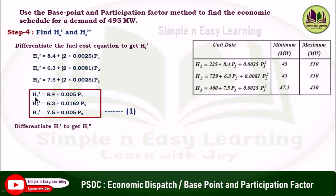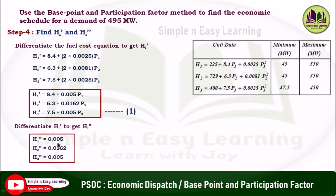Now differentiate h_i' to get h_i''. Differentiating h1' = 8.4 + 0.005·P1: the constant 8.4 gives 0 and 0.005·P1 gives 0.005. So h1'' = 0.005. Similarly, h2'' = 0.0162 and h3'' = 0.005. Take these as the second set of equations.